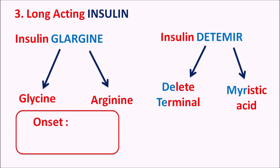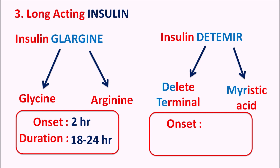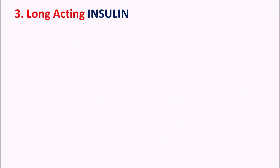Insulin glargine has an onset of action around 2 hours and a duration of 18 to 24 hours. Insulin detemir has an onset around 1.5 hours and a duration of around 24 hours. Both produce a basal release of insulin; insulin detemir in particular shows no peak in insulin release, giving a flat basal profile.